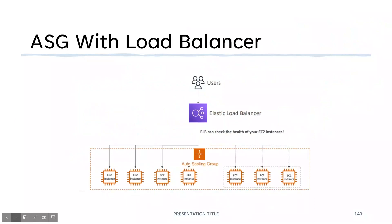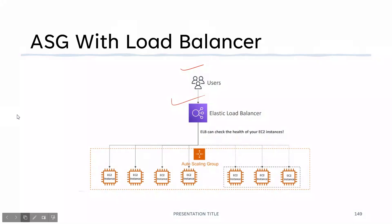ASG with a load balancer: we have users, we have an ELB, and then we have instances in our Auto Scaling Group. The ELB will distribute traffic between our instances.